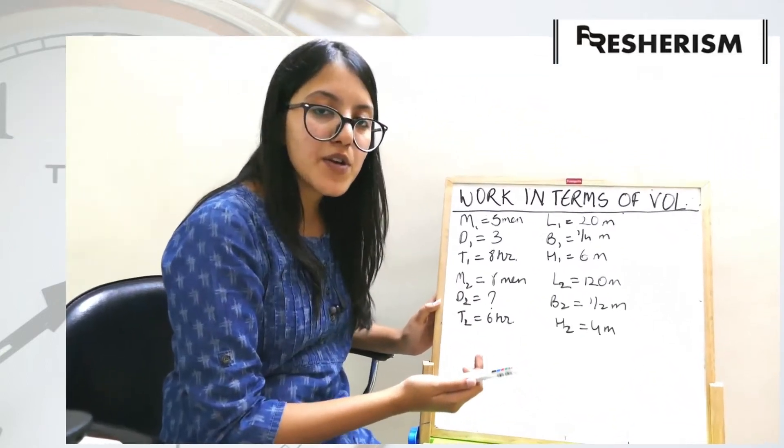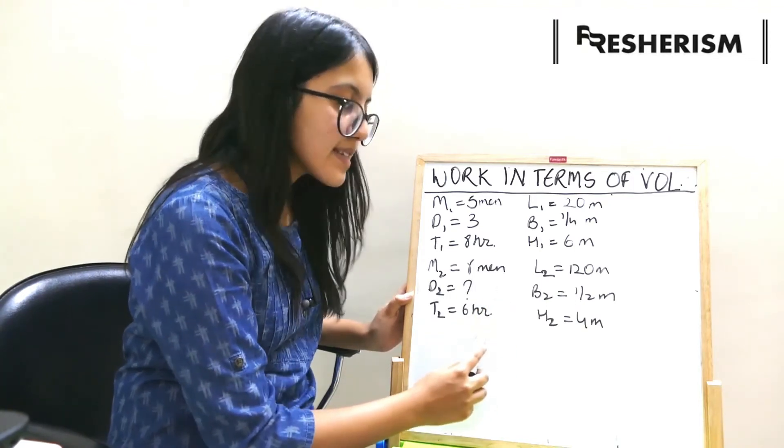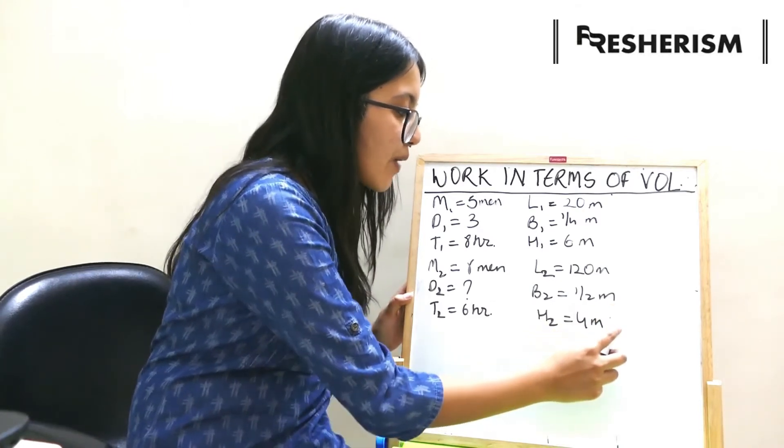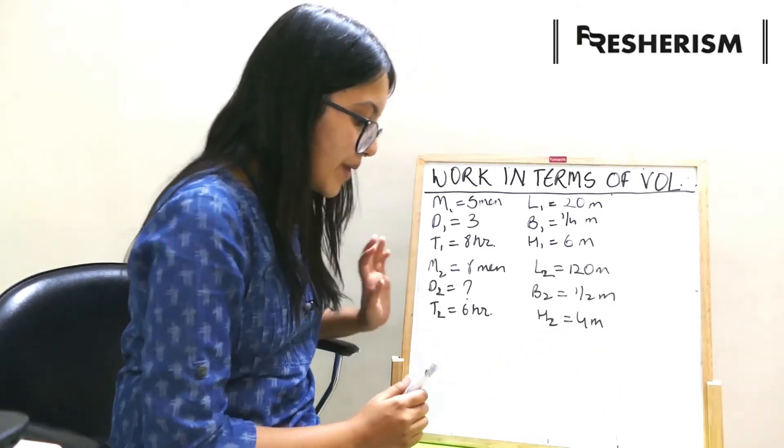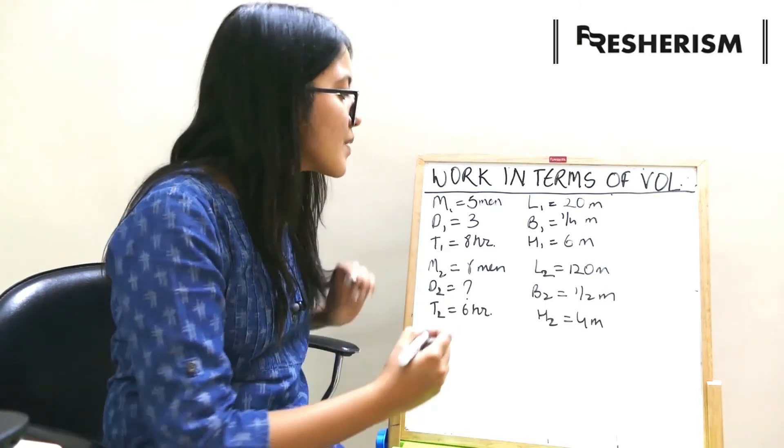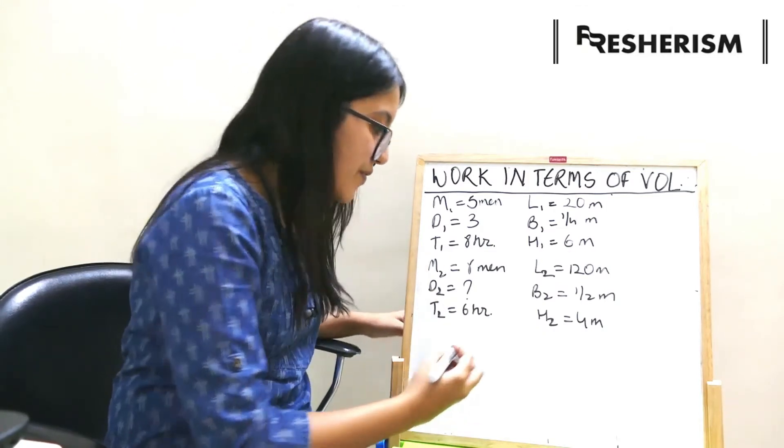So, we need to find out here that how many number of days will 8 men take who work 6 hours per day to build a wall of 120 meter, breadth 1 by 2 meter, and height 4 meter. It is very easy, it looks complicated, but we will just have to put all the numericals in the equation that we derived before.